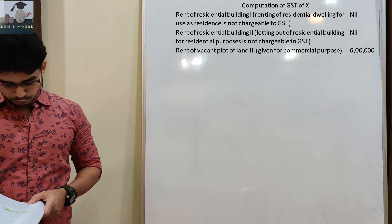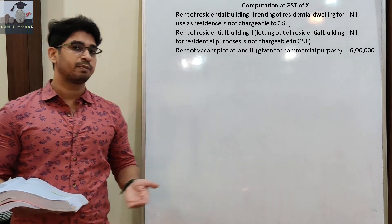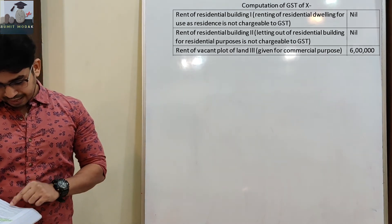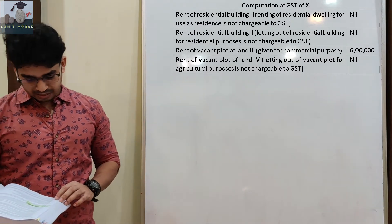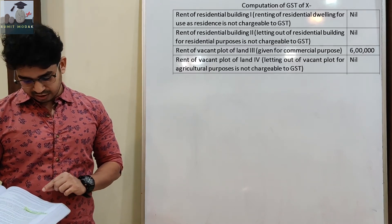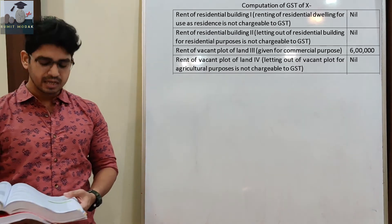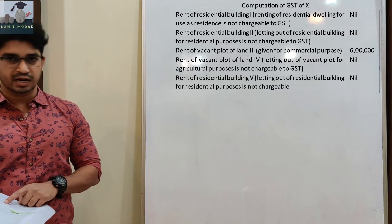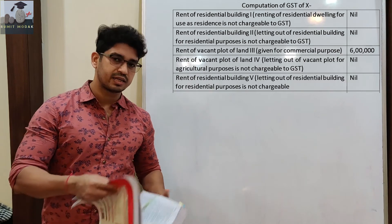Rent of vacant land 4 - given on rent for agricultural purposes. We know that if land is given on rent for agricultural purposes, GST is not applicable. So letting out of vacant plot of land for agricultural purposes is not chargeable to GST - NIL. Rent of residential building 5 - given on rent to Z Limited for residence of employees, Rs. 3,50,000. Since it is given on rent for residential purposes, GST is not applicable - NIL.